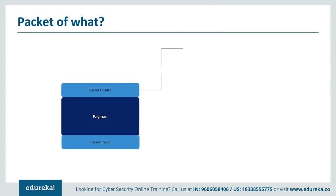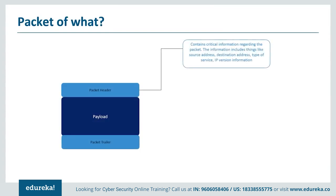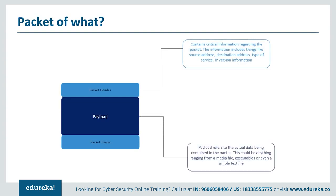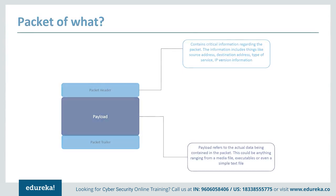Like an atom, a data packet has a complex structure which can be broken down into three significant parts: the packet header, which contains critical information about where the packet is coming from and where it is headed; the payload, which is basically the data contained by the packet; and the packet trailer, which signifies the end of a packet. Out of the three, the packet header is the most important to understand when understanding the structure of a network.